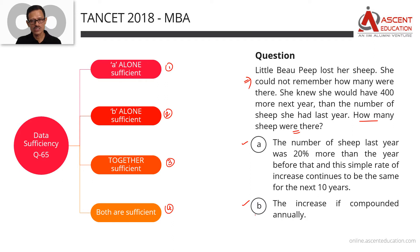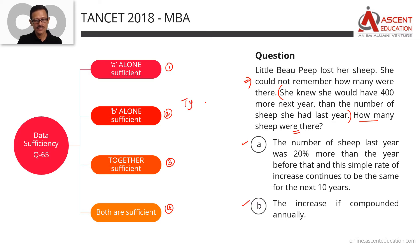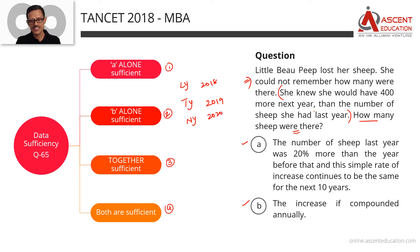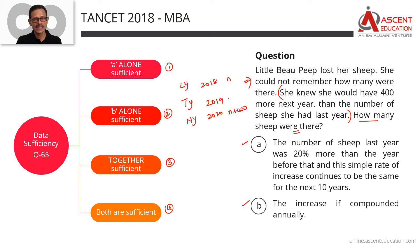Let's read the question. Little Bo Peep lost her sheep — she could not remember how many there were. How many sheep were there? She knew she would have 400 more next year than the number of sheep she had last year. We will decode this. We say this year is 2019, so last year is 2018 and next year is 2020. The actual question is: how many sheep did she lose?